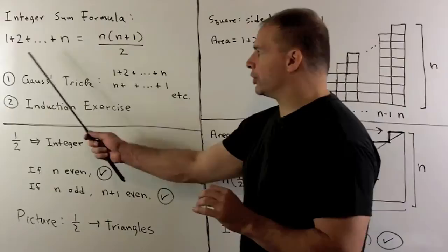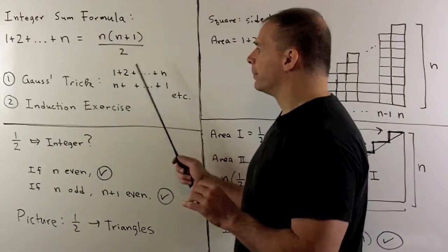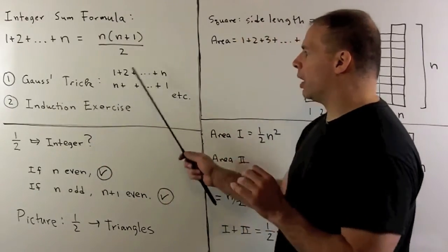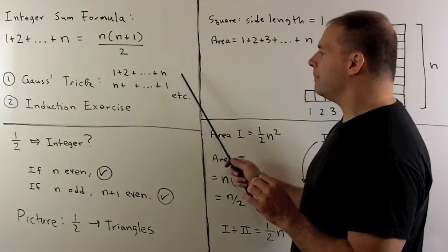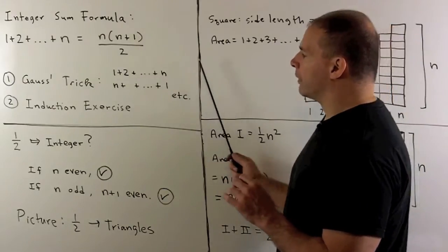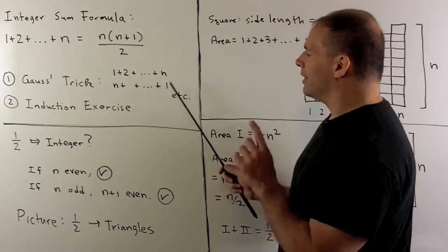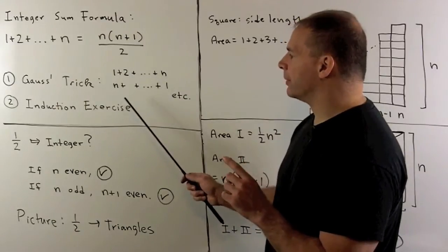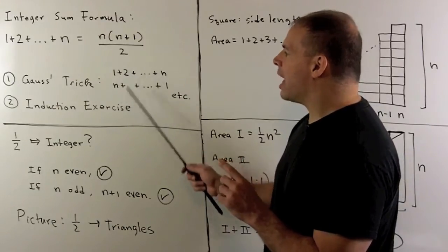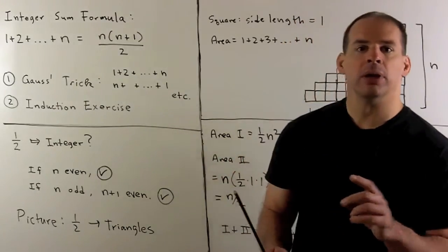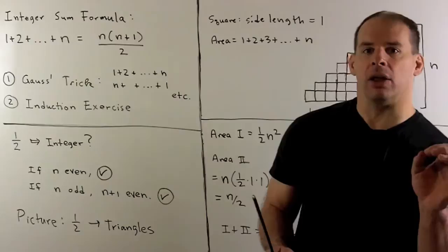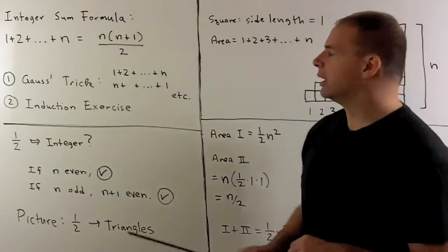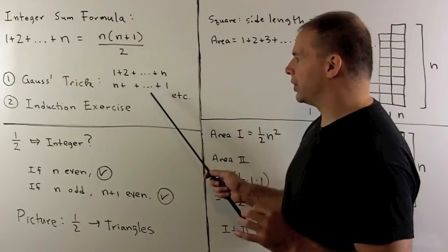The way we usually show this is with Gauss's trick. We take 1 plus 2 plus 3 all the way up through n, then reverse the order of the sum, and add these two terms column-wise. Each column adds up to n plus 1. We have n columns, so we get n times n plus 1. Since we have two of these, we divide by 2.